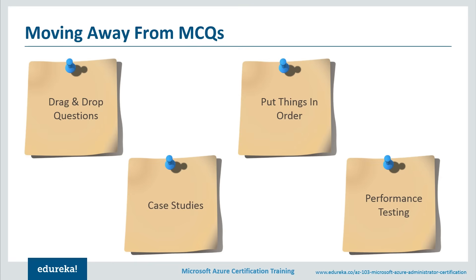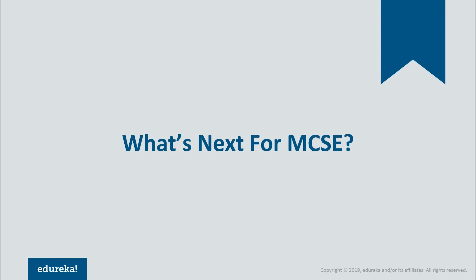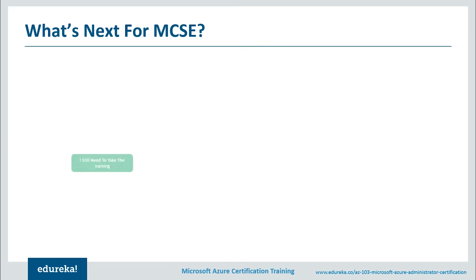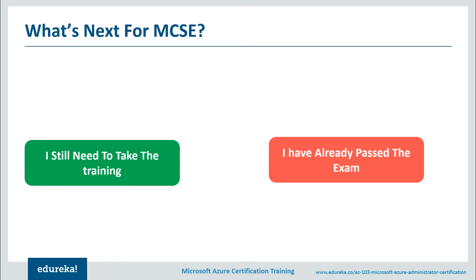Once you solve a particular case study, you'd be given the next one to solve. These question details are still under the hood as the exam is new, and as more people take it they'll be in a better state to share what to expect. As for what's next for MCSE: if you've already taken and passed AZ-100, you do not have to take AZ-103 — you will receive the Azure Administrator Associate certification. If you have not taken the exam, you would be expected to pass AZ-103. There are slight changes as AZ-100 and AZ-101 were combined, so review the updated syllabus.